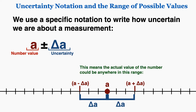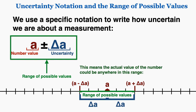So the largest possible value would be A plus delta A. This means that the actual value of our measurement could be anywhere within this range from A minus delta A to A plus delta A, and that's why we use the symbol plus or minus delta A when dealing with uncertainty. This notation represents a range of possible values — a range of numbers that our measurement could be inside.